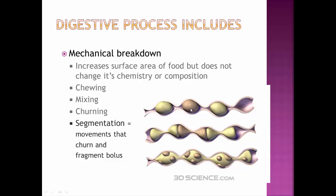In segmentation, for example, you would contract right in the middle of a chunk of food and that would split it into two pieces. Then you contract the muscles again to break it into even smaller pieces. The result is that everything becomes much smaller and the foods are mixed together more.